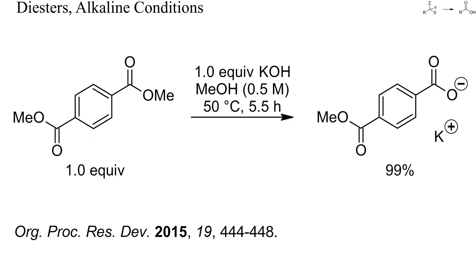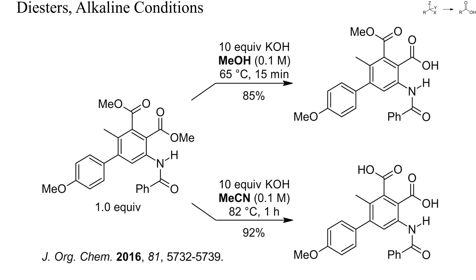If two alkylcarbonyl groups are however not conjugated and far apart from each other, then a selective monosaponification will be difficult. In this example, a non-symmetric diester could be monosaponified with an excess of potassium hydroxide in methanol. Although the methoxycarbonyl group adjacent to the benzoylamino group was electronically deactivated, it was saponified faster, probably because of the hydrogen bond to the amide. In the polar aprotic solvent acetonitrile, both ester groups could be saponified without cleavage of the amide.